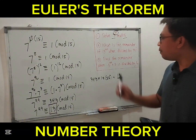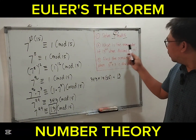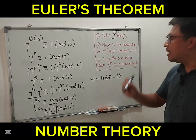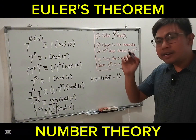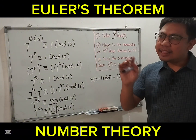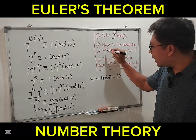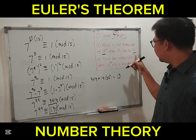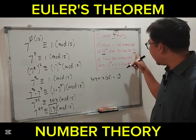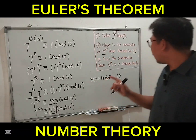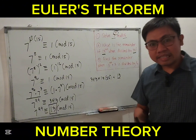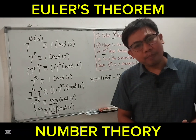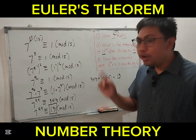Next, example number 2: what is the remainder of 13 to the 62nd power when divided by 99? First condition: A and N must be co-prime. So A is 13 and N is 99. Since 13 is a prime number, 13 and 99 don't have a common factor — 99 is not divisible by 13 (99 divided by 13 is about 7.61). So 13 and 99 are co-prime, and therefore we can use Euler's theorem.